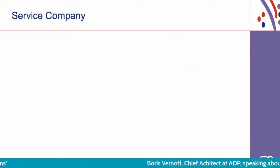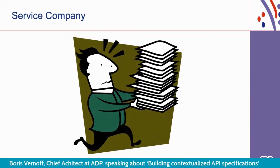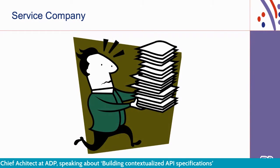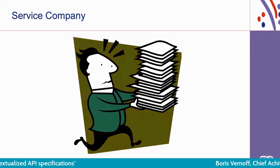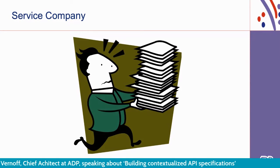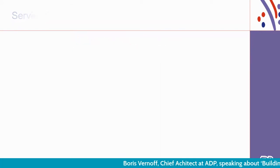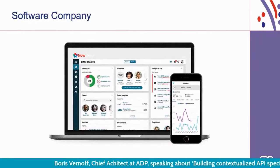Many years ago ADP started as a service company, literally delivering payroll documents to its customers. Before joining my current function, I was part of the ADP Innovation Labs — that's where the API journey actually began. There was a perception at the time that 'innovation' and 'ADP' couldn't be used in the same sentence, but over the past 10-15 years the company has successfully transformed from a service company using technology into a software company providing services.